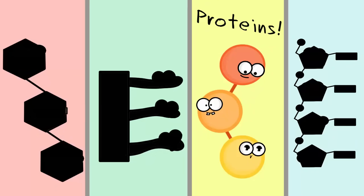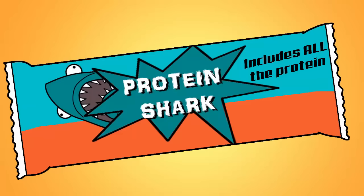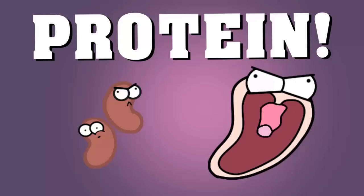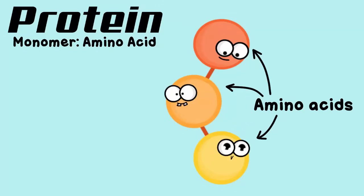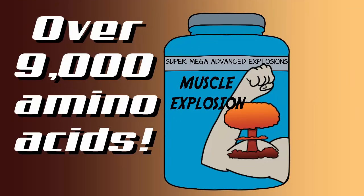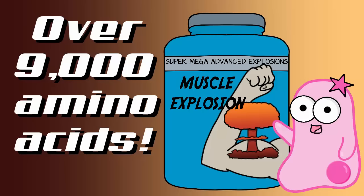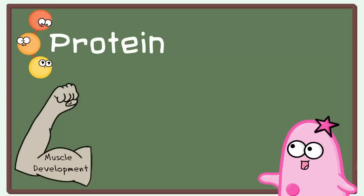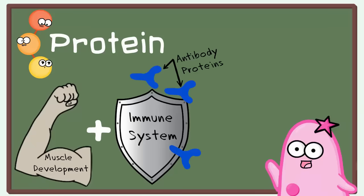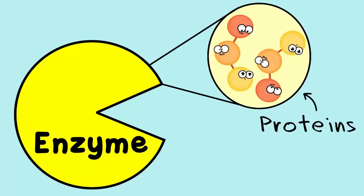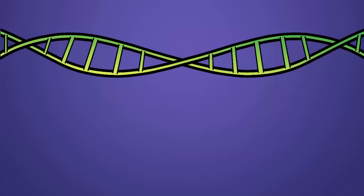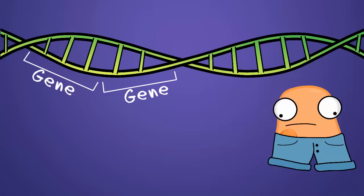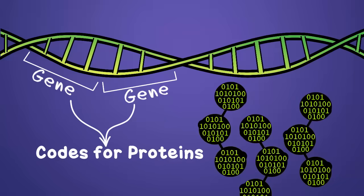Next, proteins. When you hear about proteins, you might think about power bars that help with muscle building. Protein is great for muscle building. Examples of foods high in protein include meats and many types of beans. The monomers of protein are amino acids. Sometimes labels say a food has 20 amino acids — they're really just saying it has protein, because proteins are made of amino acids. In addition to muscle development, protein is also important for the immune system and acting as enzymes. The DNA genes — not the jeans you wear — code for proteins that are very important for structure and function in the body.